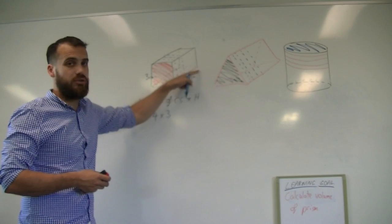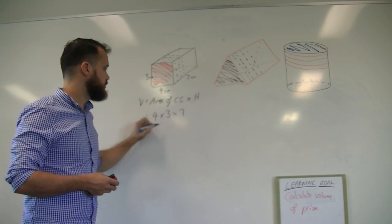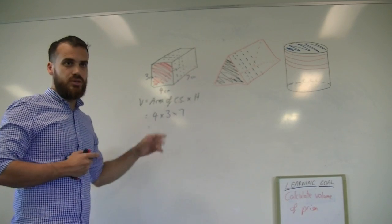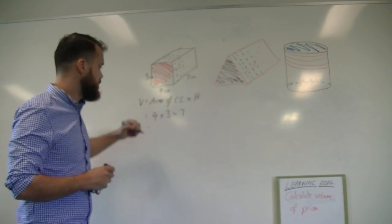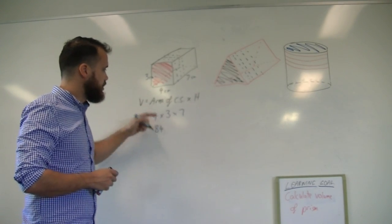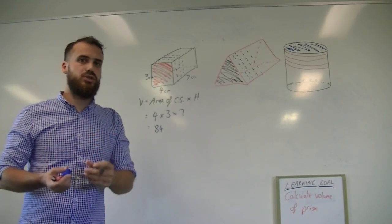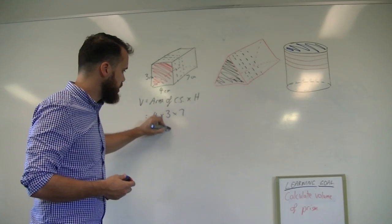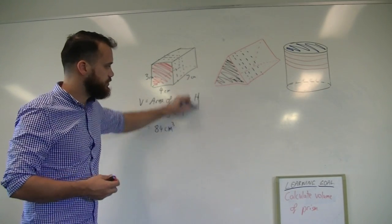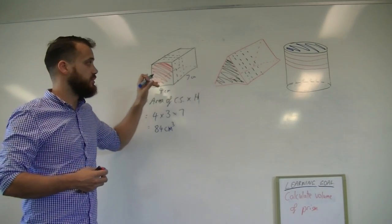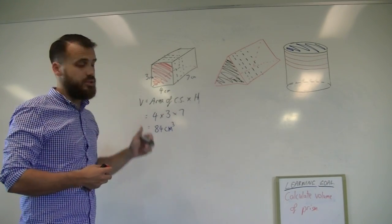And then we need to multiply it by the height. And the height is going to be the distance from the cross section. You can type that into your calculator. Four times three is twelve times seven. That should be 84. Now remember, it's a volume, and volume is measured in units cubed. So this is going to be centimeters cubed. So that's the volume of a rectangular prism.